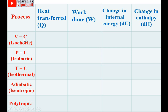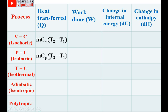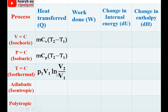For the isochoric process (constant volume), heat transfer is mCvΔT, where Cv is the specific heat at constant volume. For the isothermal process, heat transfer is P1V1 ln(V2/V1). Sometimes log is used instead of ln, but that log is to the base e, so for calculation you multiply by 2.3. It is easier to remember P1V1 ln(V2/V1) and use ln directly from the calculator.